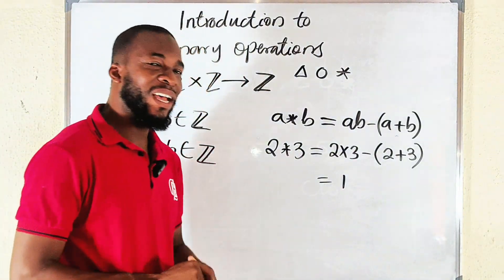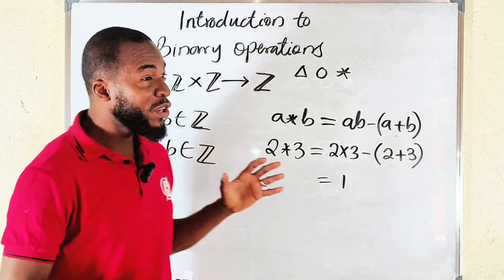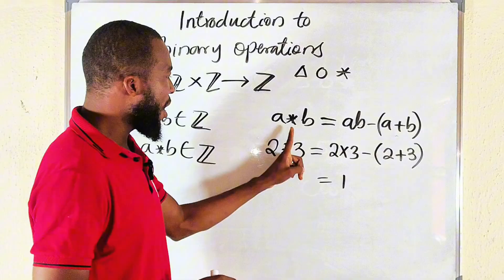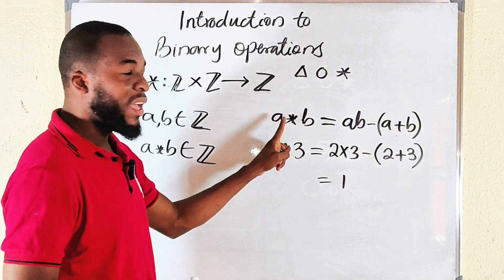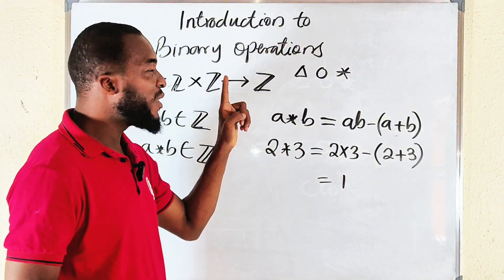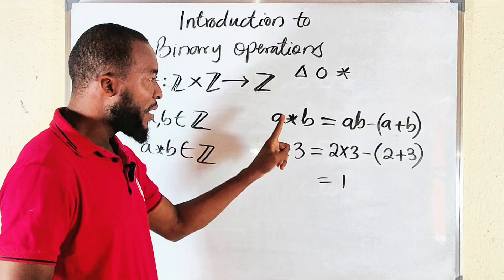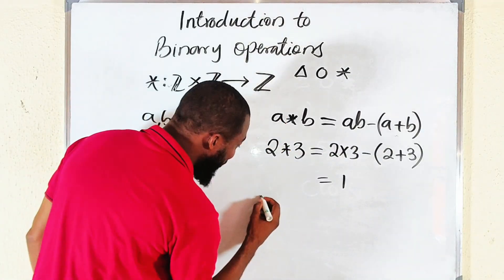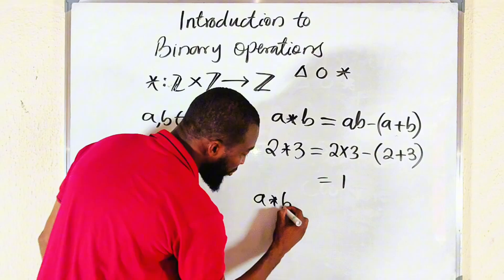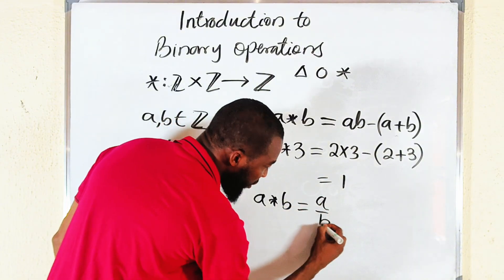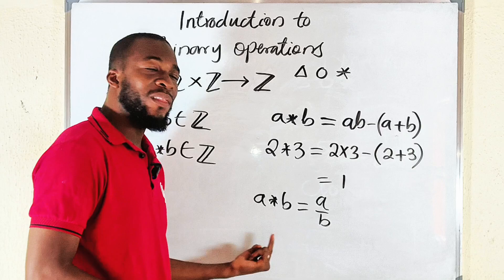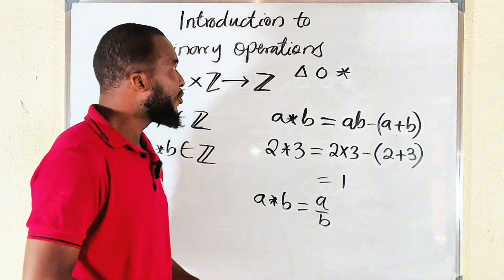This is just an introductory class. In our next meeting, we are going to talk about the properties of binary operations. You have seen how we represent binary operations. I told you, you must always define them because you don't know what an asterisk means. They can say that wherever you see a asterisk b, it means what? a divided by b. From the textbook or from the question, they will always define that operation for you.